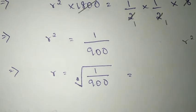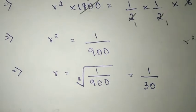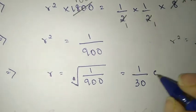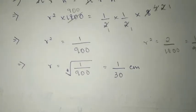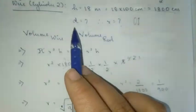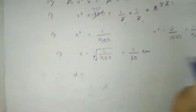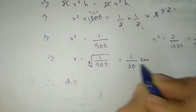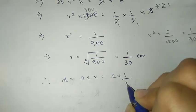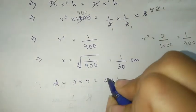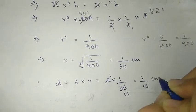So the radius equals 1 by 30 centimeters. Now for the thickness: diameter is considered the same as thickness. Diameter equals 2 times radius, which equals 2 times 1 by 30. Cancelling, we get 1 by 15 centimeters, because two fifteens are thirty.